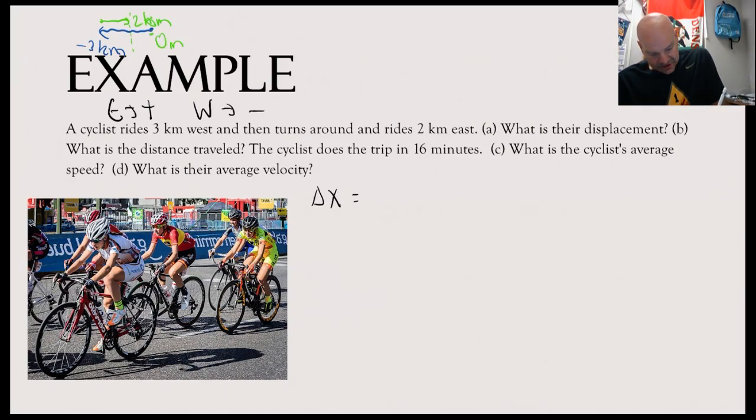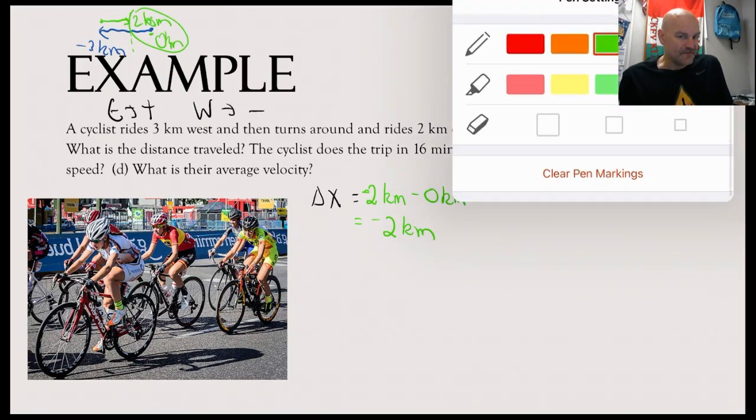So my initial position is zero meters, and I end at—excuse me, my final, I forgot the negative sign. So my final position is negative two kilometers. My initial position is zero kilometers. So that tells me my displacement is negative two kilometers.